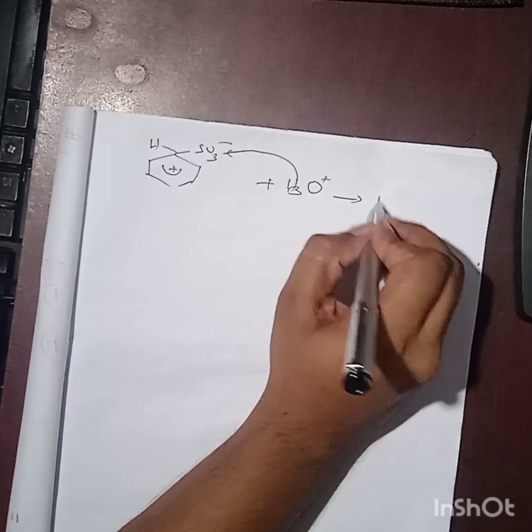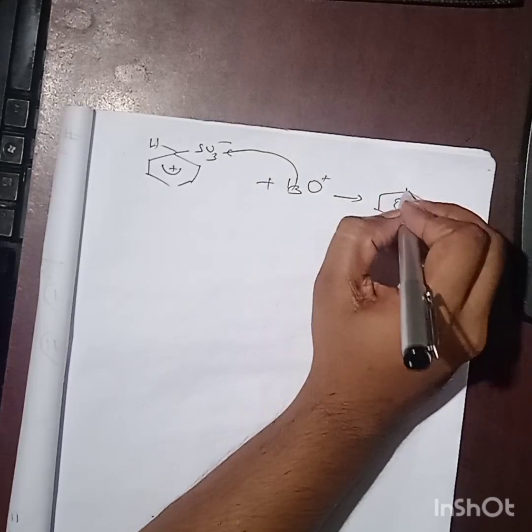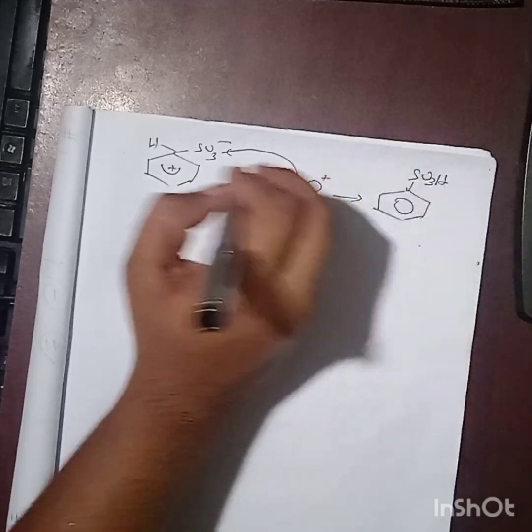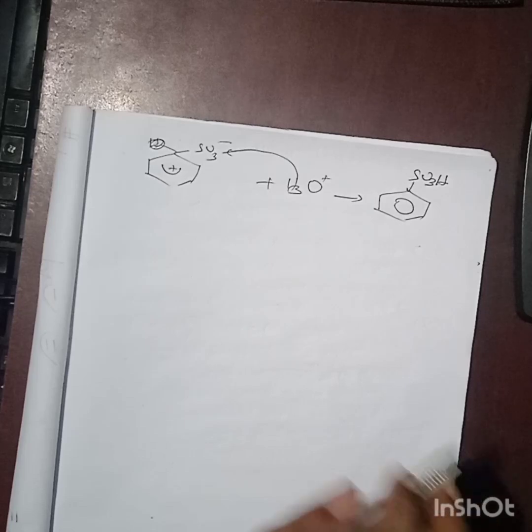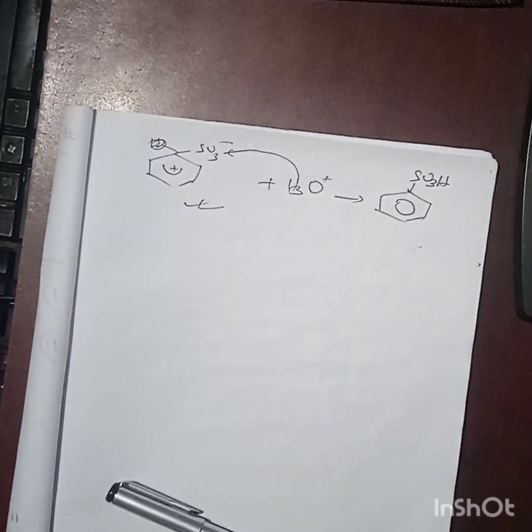Benzene becomes sulfonic acid - benzene sulfonic acid. Yes, the final product is benzene sulfonic acid. So the second step is complete.